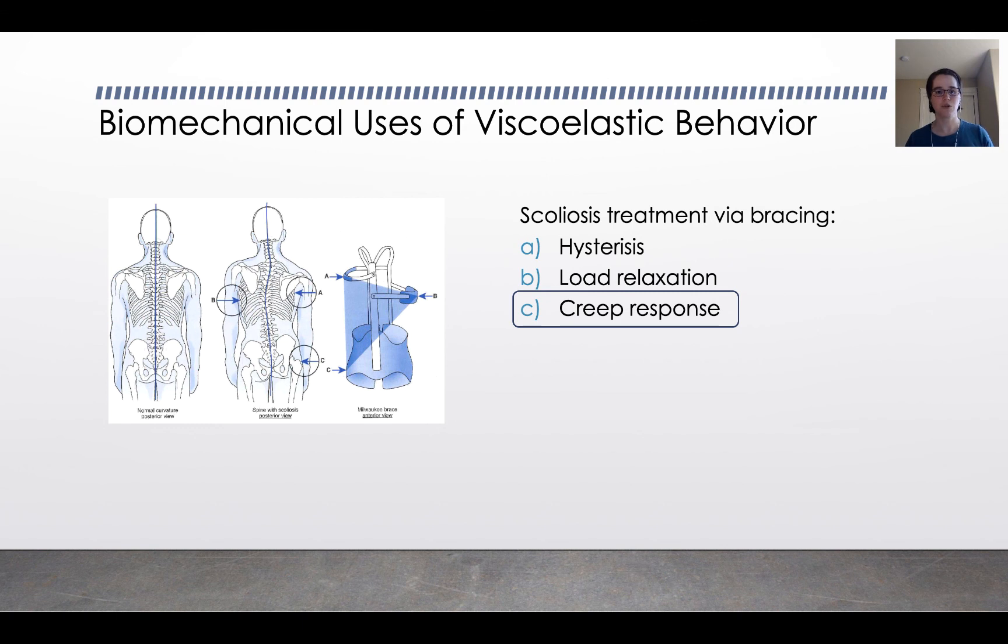There's lots of other places where you can see this in the body, in the bones and in the tendons and ligaments, because they both have a significant collagen component. So they both exhibit this viscoelastic behavior, but tendon and ligament exhibit it much more strongly, much more obviously than bone.